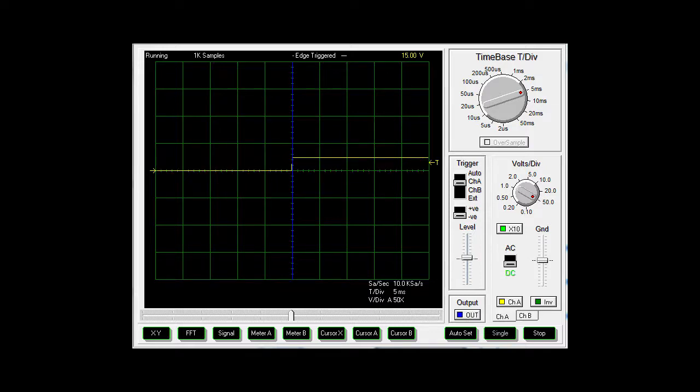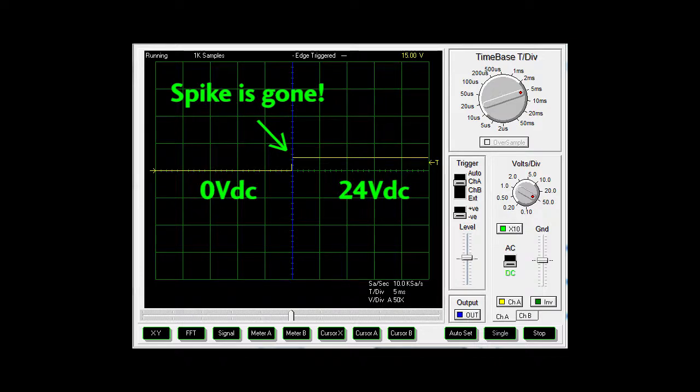and when we release the switch, the spike is gone. We get a nice clean 0 to 24V transition. Perfect.